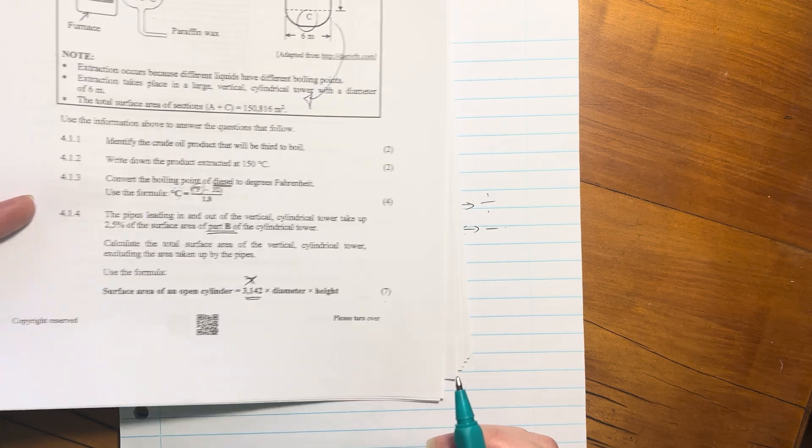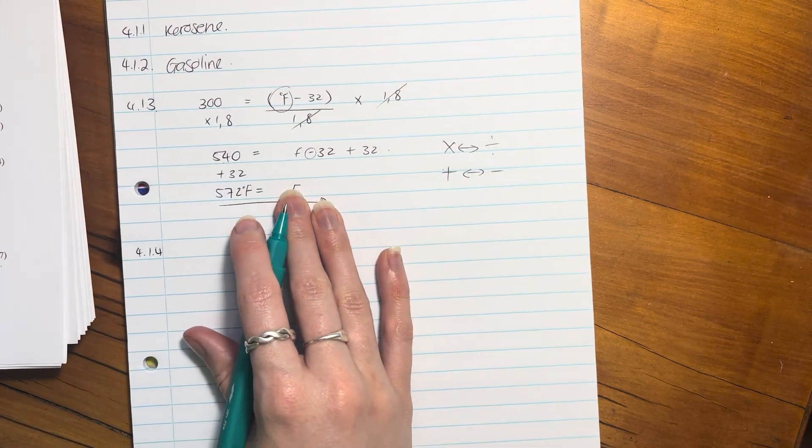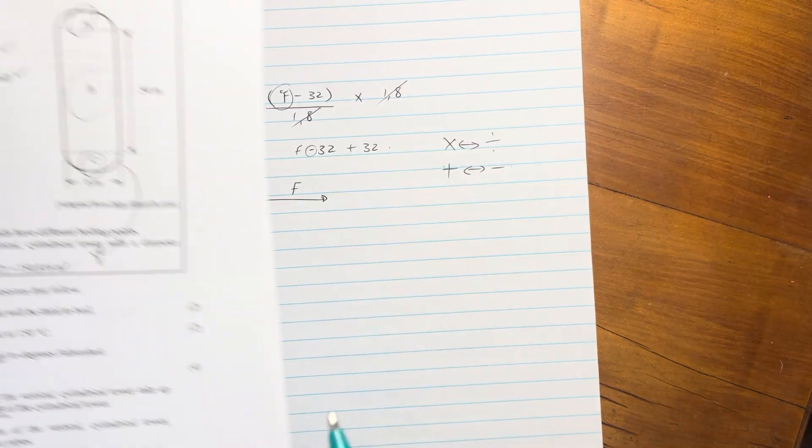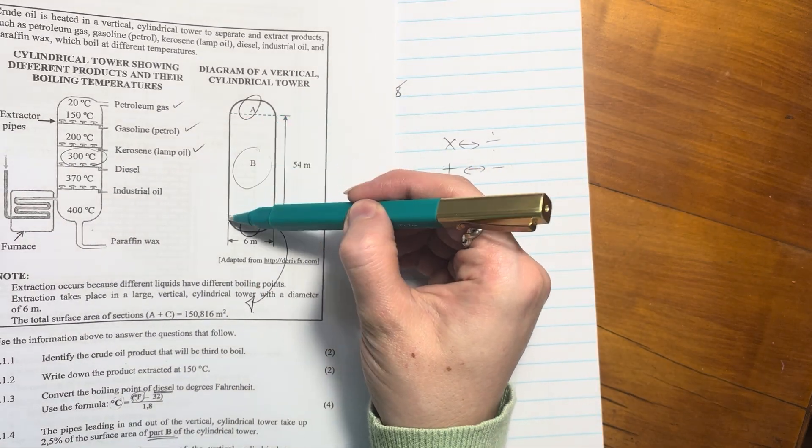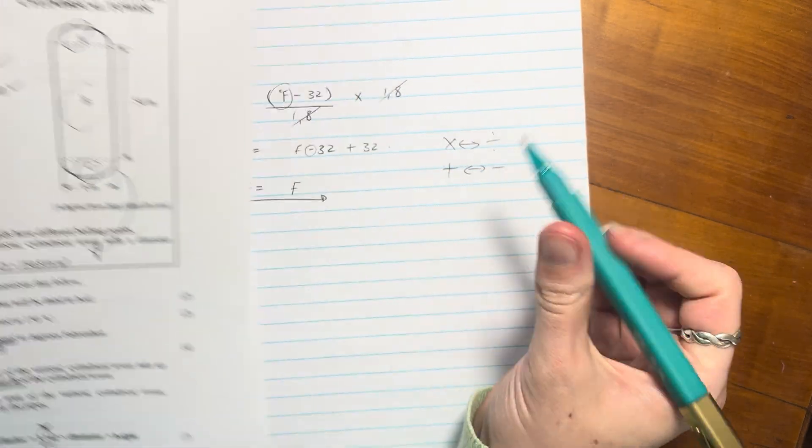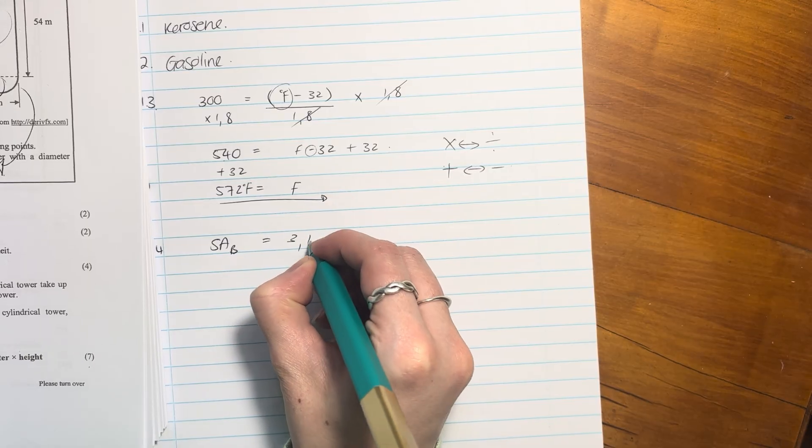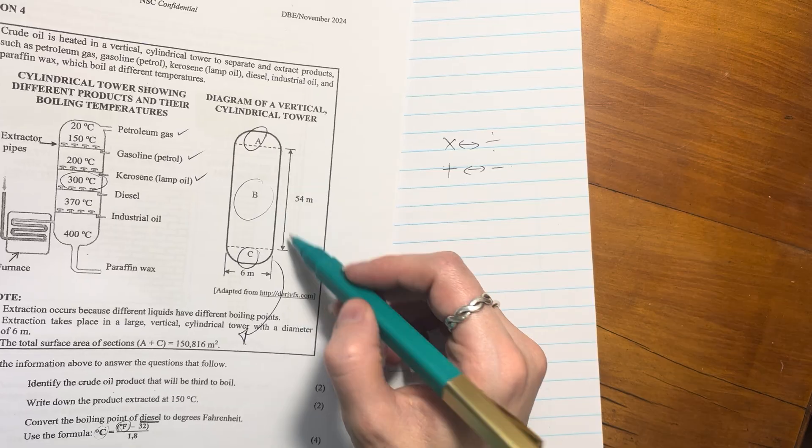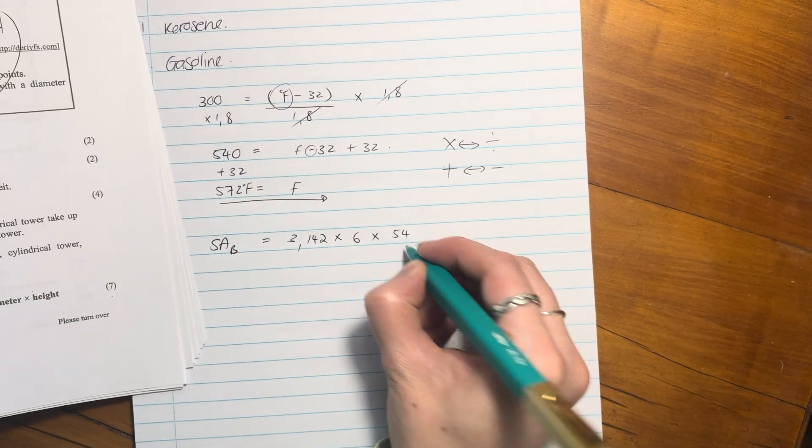Diameter and height. Let's work out B, surface area of B. Its diameter is 6, so we're going to say 3.142 times diameter is 6 and its height is 54.